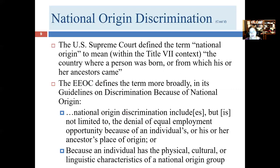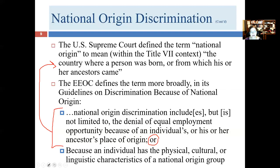The EEOC defines national origin discrimination as including, but not limited to, denial of equal employment opportunity because of an individual's or their ancestor's place of origin — which tracks the Supreme Court language — but also adds a second category: because an individual has the physical, cultural, or linguistic characteristics of a national origin group. A person can have these characteristics without fitting neatly into that category, as we'll see in examples going forward.